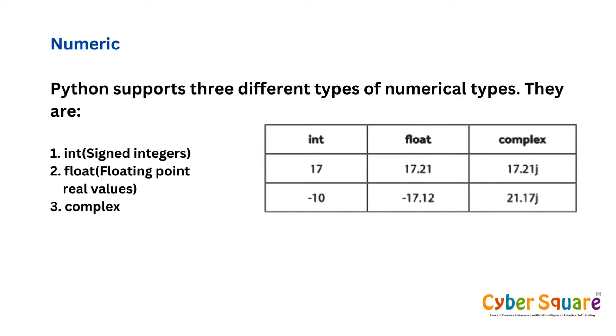Integers are whole numbers without decimal parts. Floats are numbers with decimal parts. Complex numbers have both real and imaginary parts, often denoted as a+bj, where a is the real part and bj is the imaginary part.